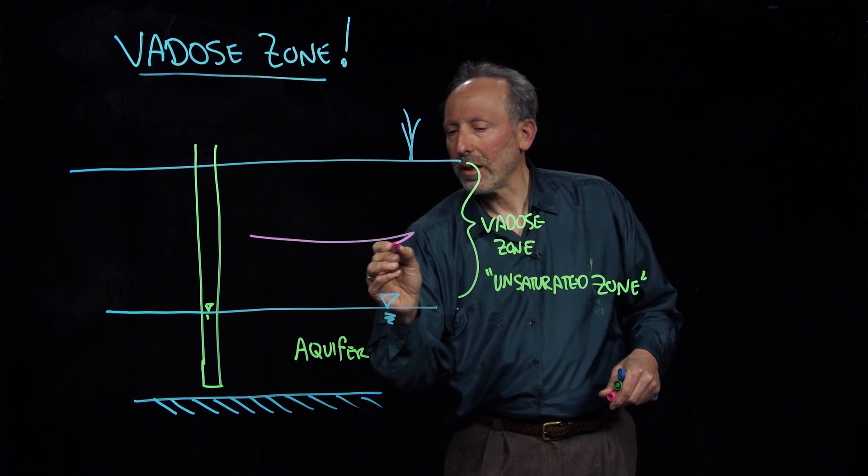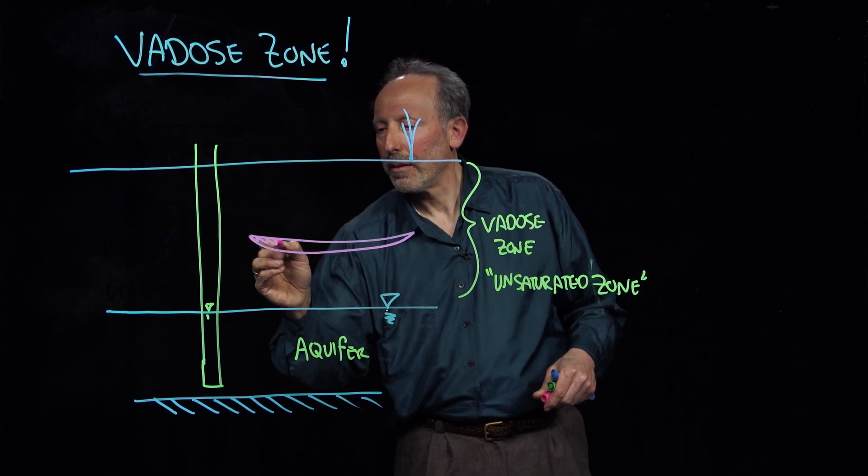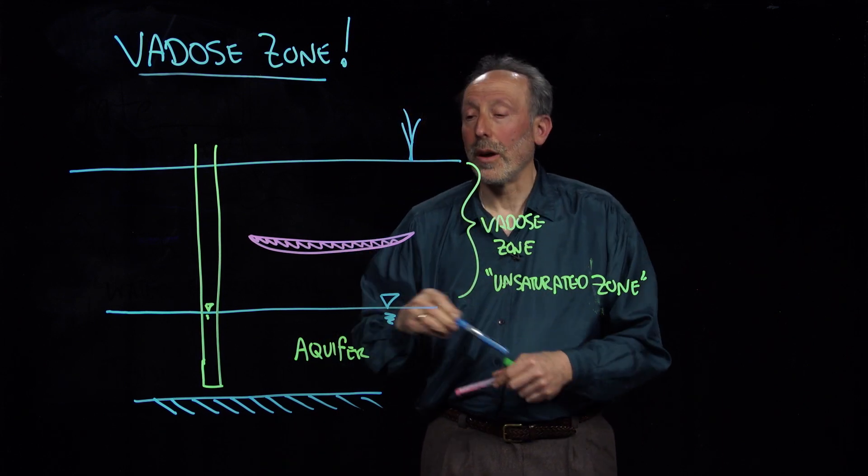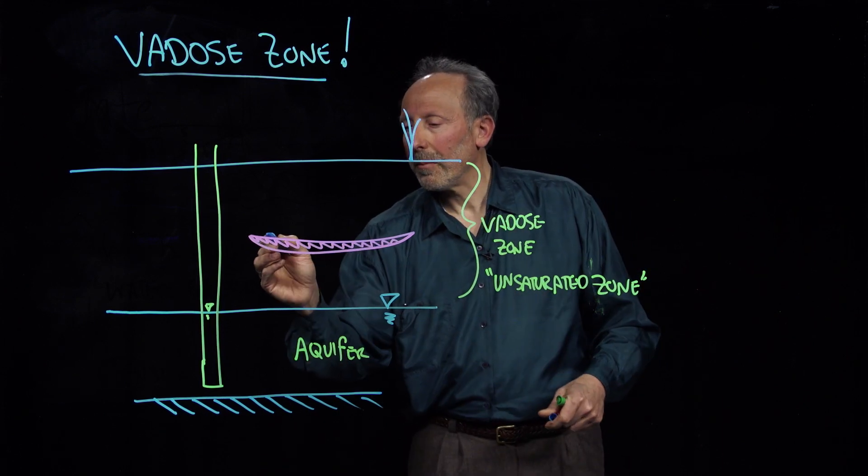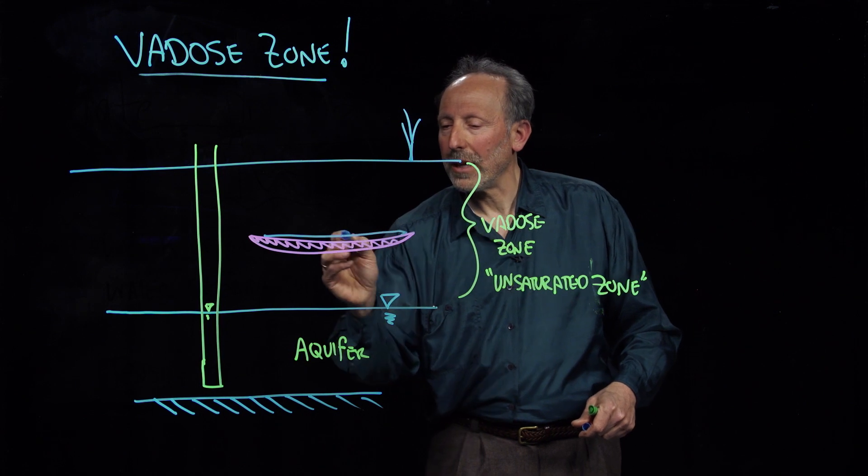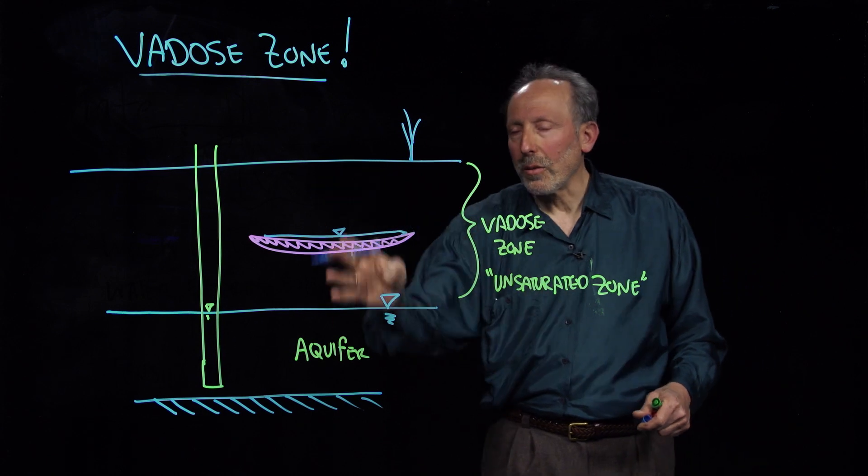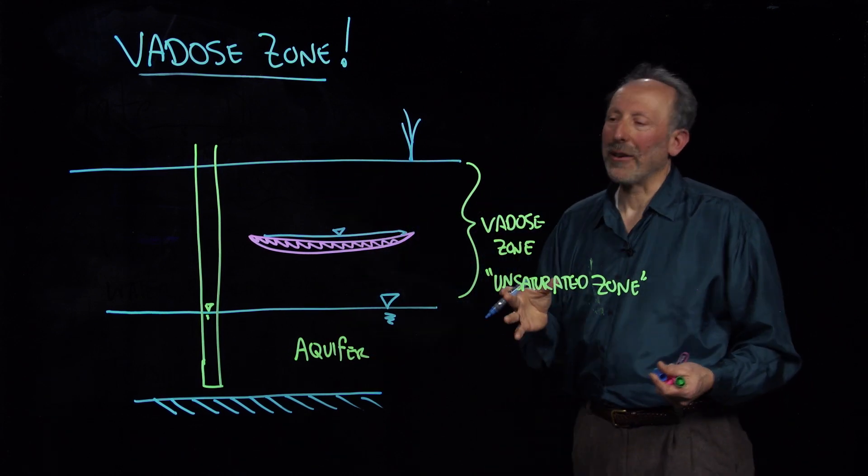So if we had, for example, a little clay lens here, then we could certainly end up with having a little saturated zone here above the clay lens. And this would be called a perched aquifer. But still we would consider this overall region the Vadose Zone.